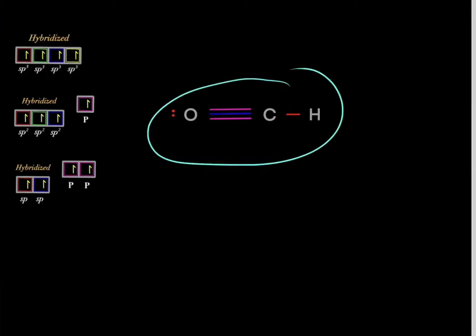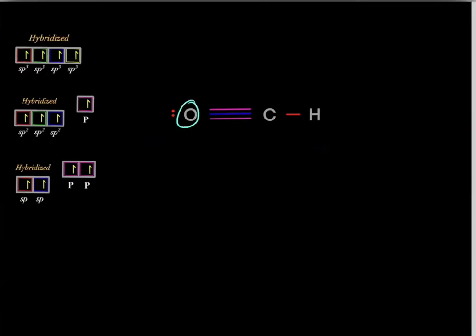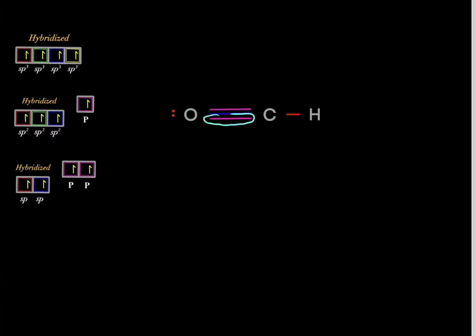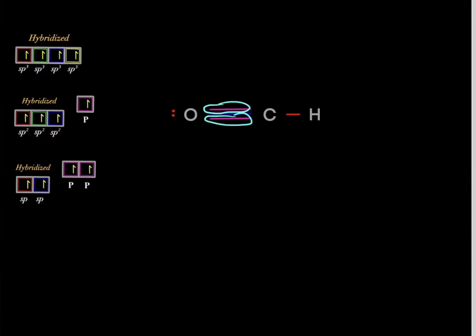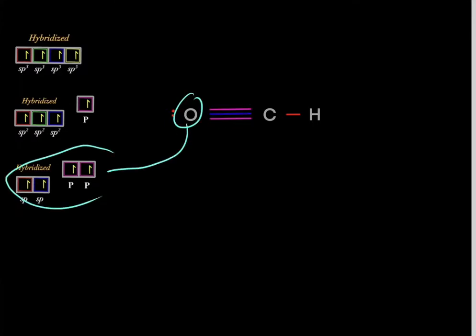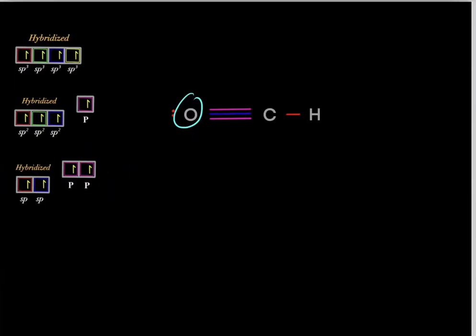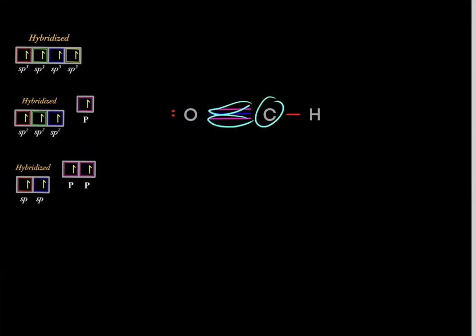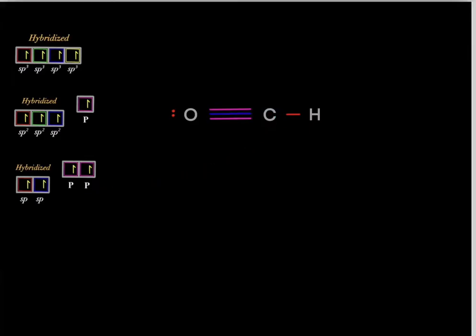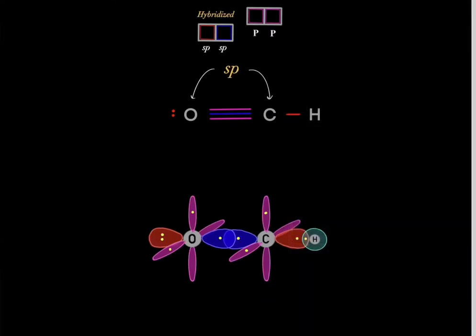What about this compound? What's the hybridization of this oxygen? We see it has one extra bond and a second extra bond — two extra bonds total. So it must have two p-orbitals, meaning this oxygen must be sp-hybridized. The same applies to the carbon in this compound: two extra bonds requires two p-orbitals, so this carbon must also be sp-hybridized.